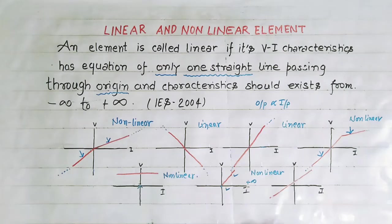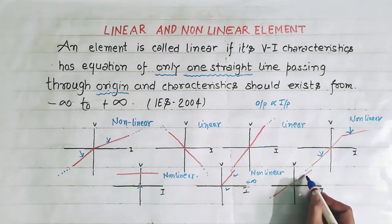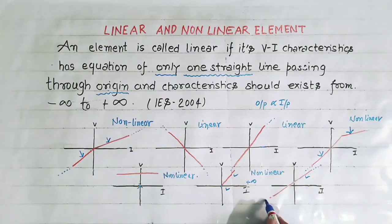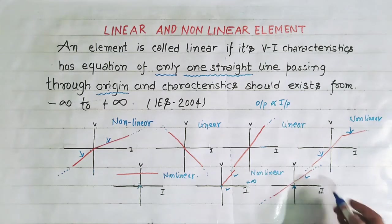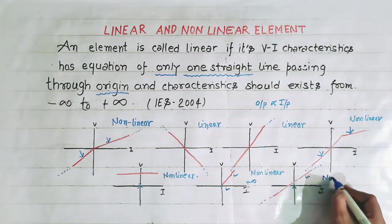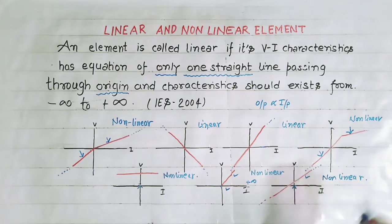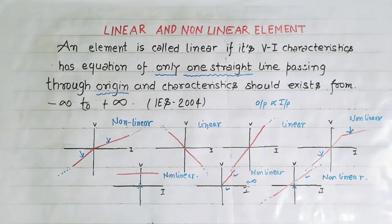Now see this characteristic — it has the equation of a straight line and it is extended from minus infinity to plus infinity, but it is not passing through origin. That's why it is also nonlinear. In this way we can categorize various elements as linear and nonlinear. I hope you understand this concept. Thank you.